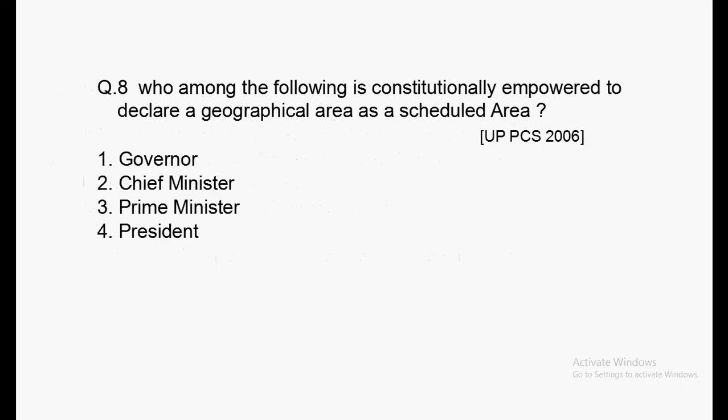Next question: Who among the following is constitutionally empowered to declare a geographical area as a scheduled area? Asked in UPSC 2006. Options: Governor, Chief Minister, Prime Minister, President. Answer: the President is constitutionally empowered to declare a geographical area as a scheduled area.